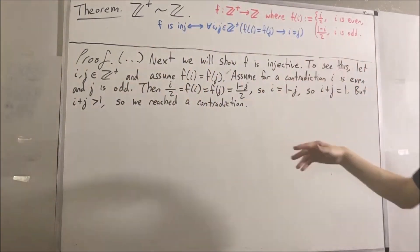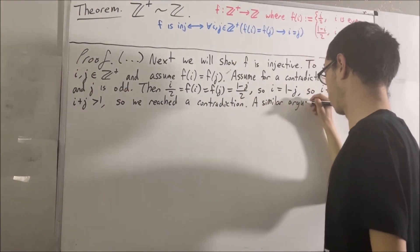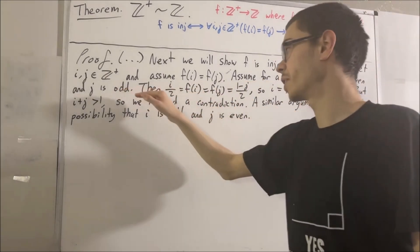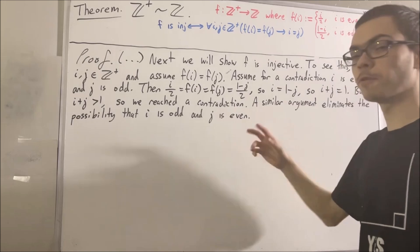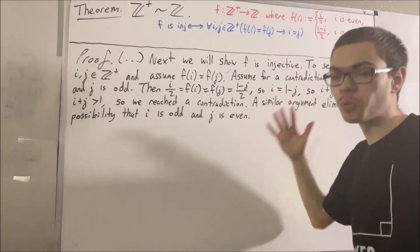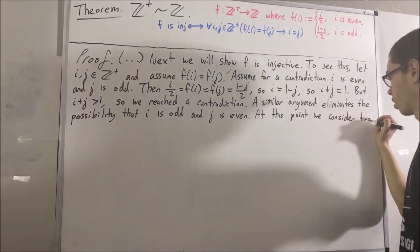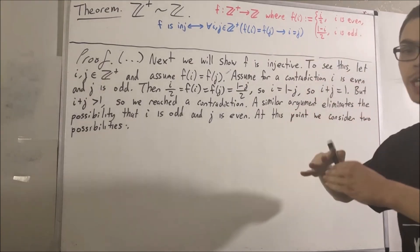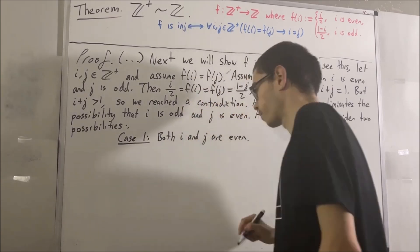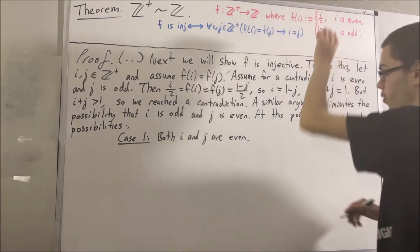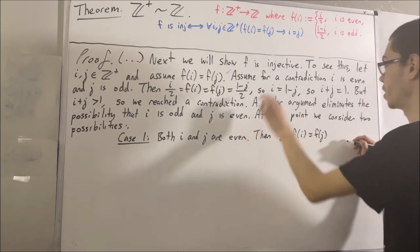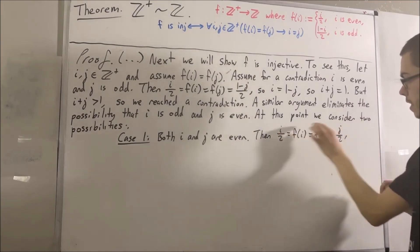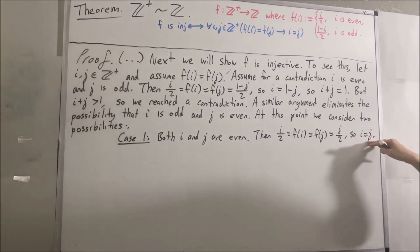We can't have i even and j odd, or i odd and j even. So we're left with two possibilities: either both i and j are even, or both i and j are odd. Let's start with the case that both i and j are even. Since i is even, f of i equals i over 2. Since f of i equals f of j and j is even, f of j equals j over 2. So i over 2 equals j over 2, and multiplying both sides by 2 gives i equals j — exactly what we wanted.